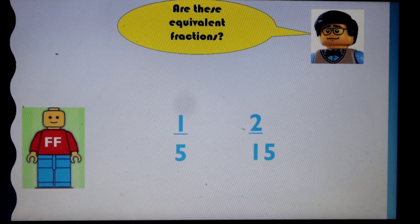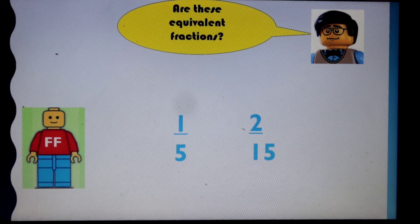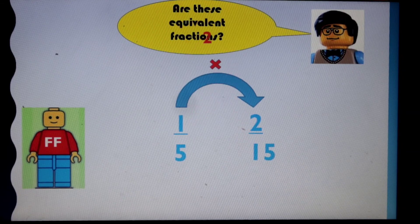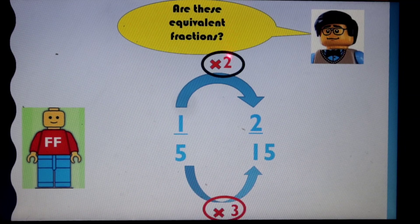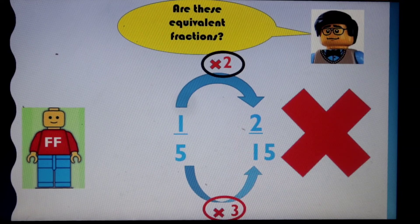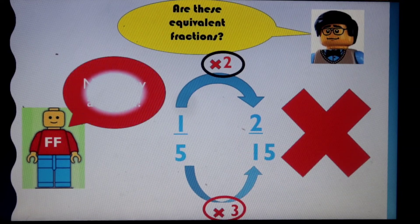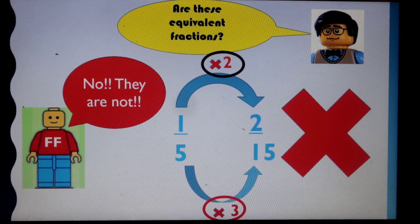Let's do this one. Are these equivalent fractions? We've got one fifth and two fifteenths. You can pause and practice to see if you can do this before I answer. One times what equals two? The answer is two. Now look at the denominator of five: what five times equals fifteen? The answer is three. Circle those numbers — are these the same numbers? No, they're not. So they are not equivalent fractions.